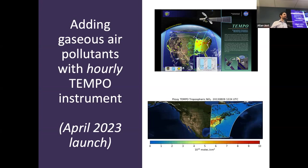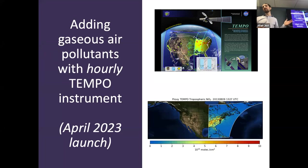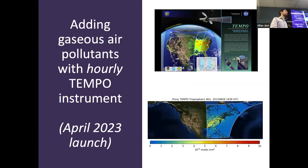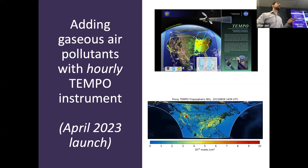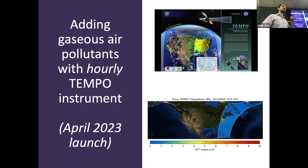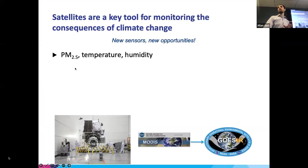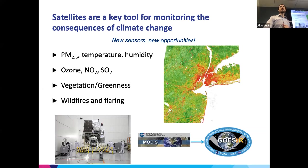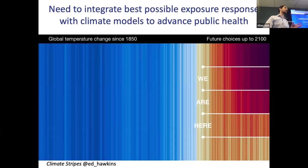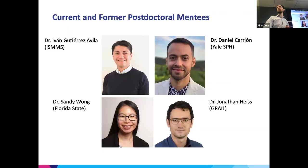Tempo is going to scan North America including down to most of central and southern Mexico hourly, focusing on gaseous pollutants but also getting aerosols. This is going to be the first geostationary instrument for this purpose, meaning it can take many scans per day. Everything is a mixture — we can measure many things from satellites — and this is going to have profound implications when we think about the human health impacts and where we go from here in terms of human health adaptation.